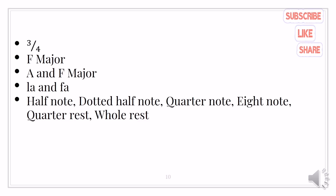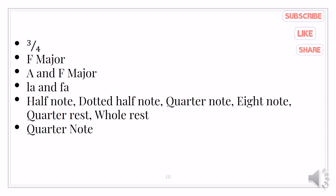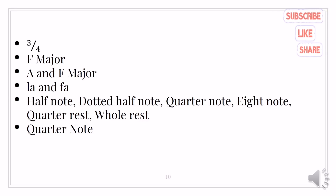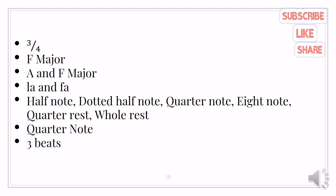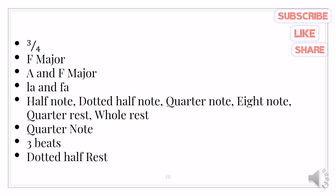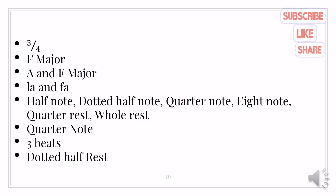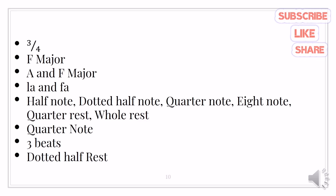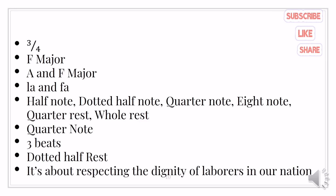The kind of note found in the first measure of the song is quarter note. The value of a dotted half note is 3 beats. The rest that receives the greatest value is the dotted half rest. The song is about respecting the dignity of our laborers in our nation.